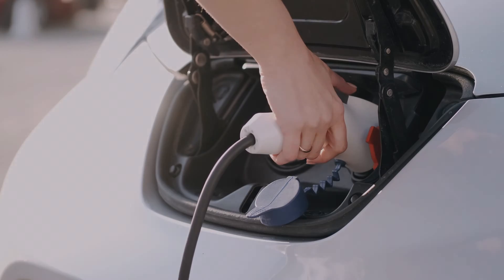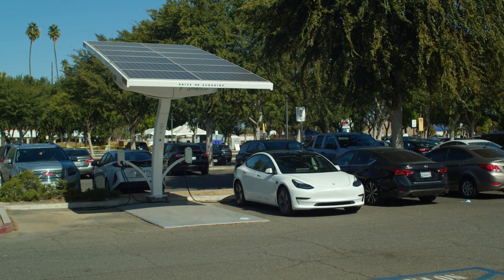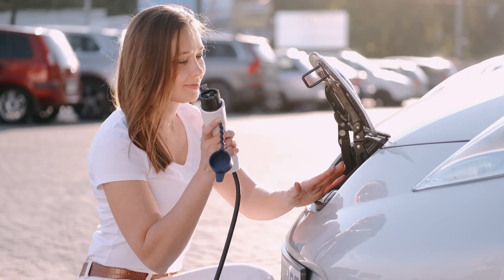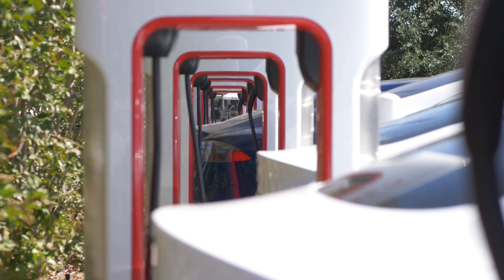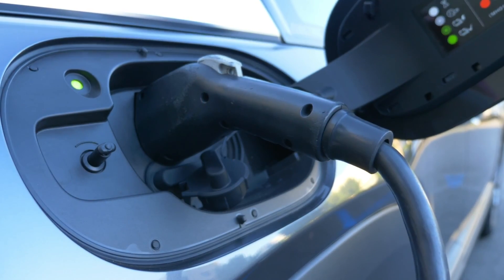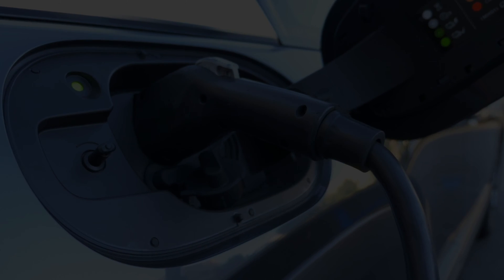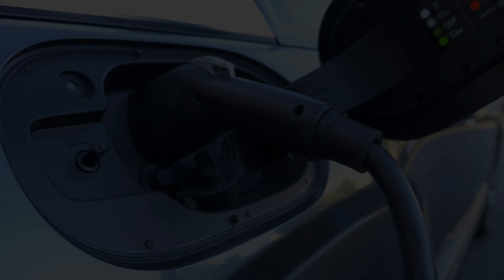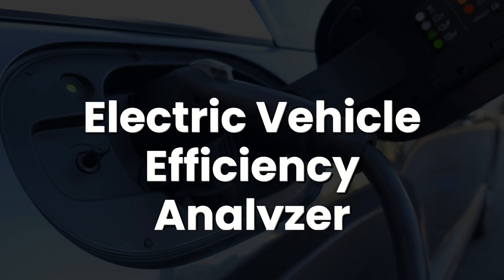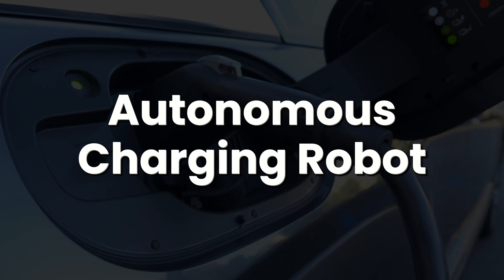Our fourth category is Electric Vehicles and Innovations. As the push towards sustainable transportation grows, our latest project topics focus on Electric Vehicles, EV charging infrastructures, and innovations in electric vehicles. This includes project topics such as Battery efficiency test, Home EV charging station, Advanced regenerative braking, Electric vehicle efficiency analyzer, and Autonomous charging robot.